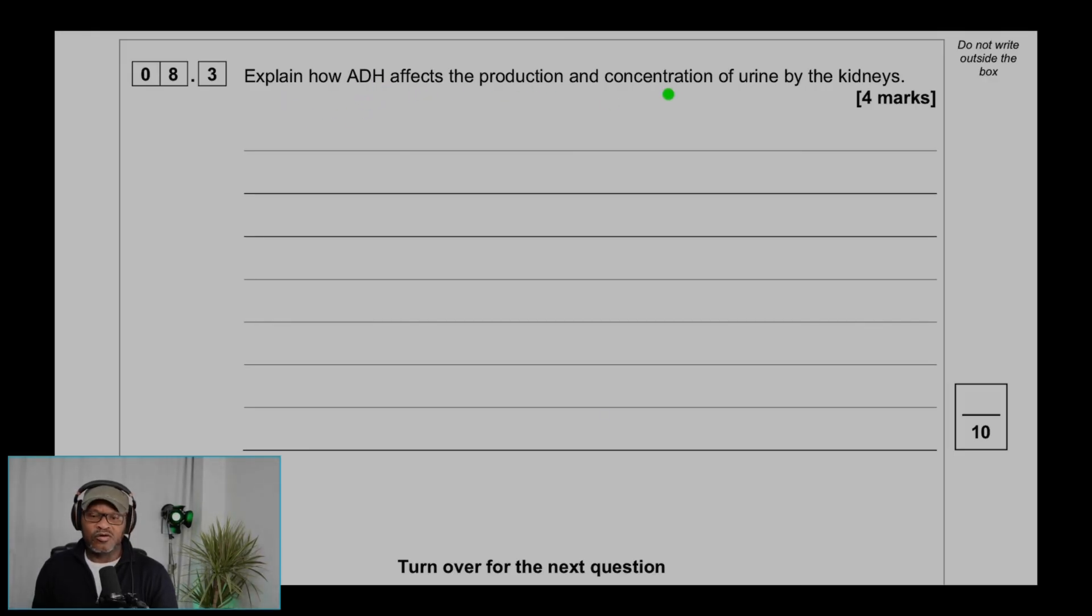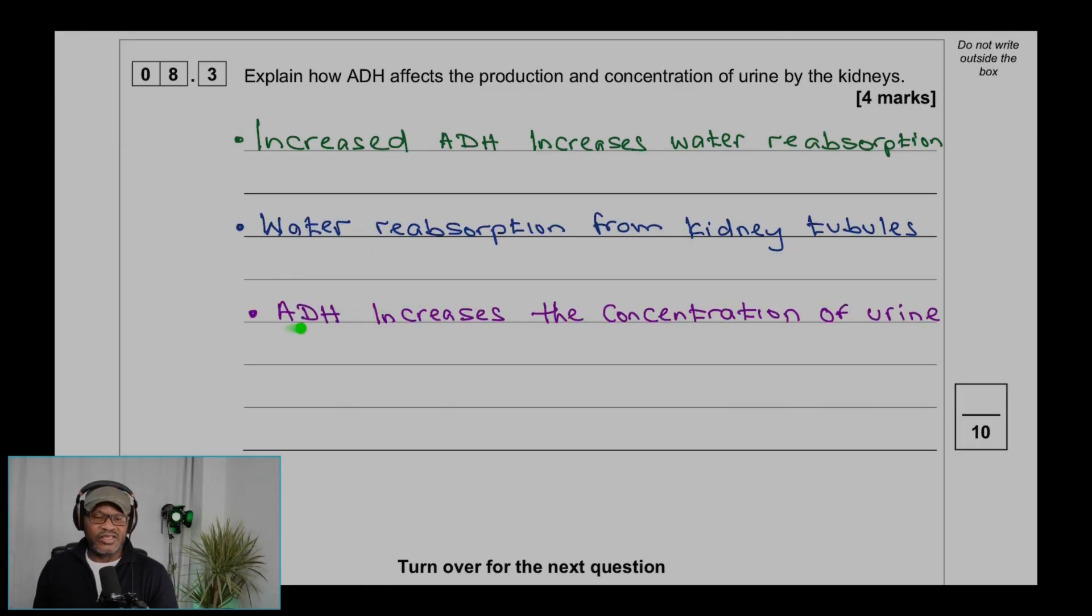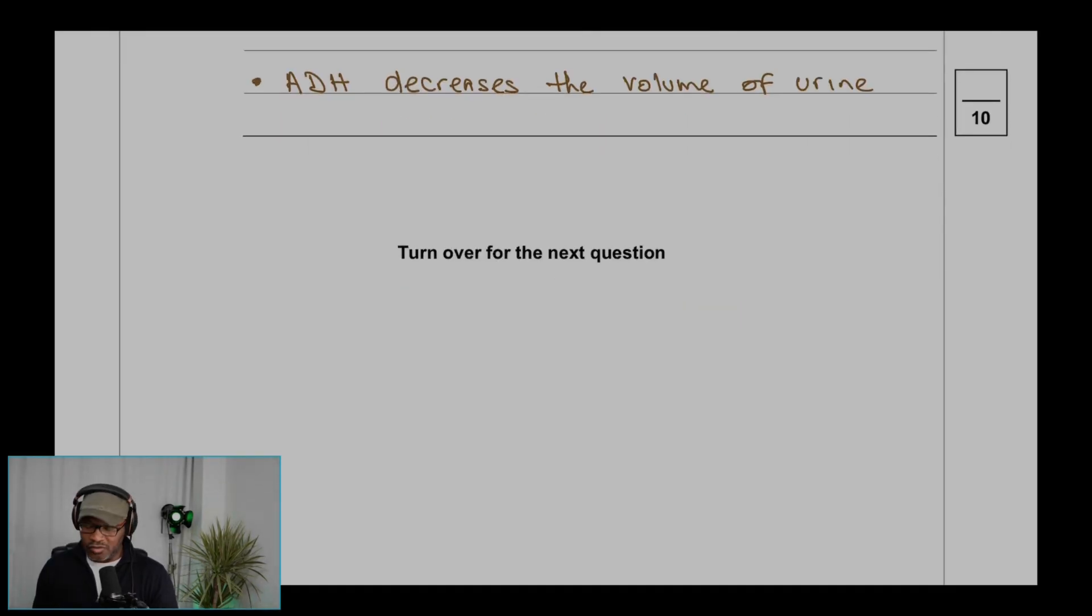8.3: Explain how ADH affects the production and concentration of urine in the kidneys. Increased ADH increases water reabsorption from the kidney tubules. ADH increases the concentration of urine. ADH decreases the volume of urine.